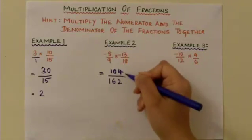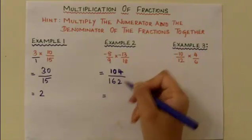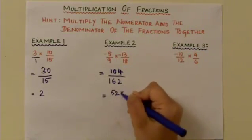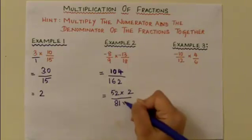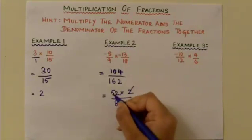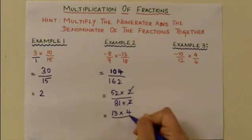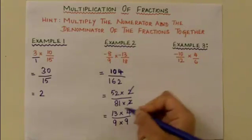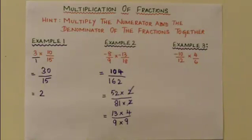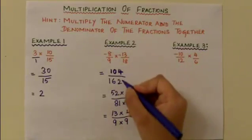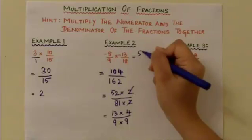104/162 can be simplified further. 104 can be written as 52 times 2, and 162 as 81 times 2. These 2s can be cancelled. 52 can be written as 13 times 4, and 81 as 9 times 9. This cannot be simplified further because there are no common factors. The final answer for -8/9 times -13/18 is 52/81.